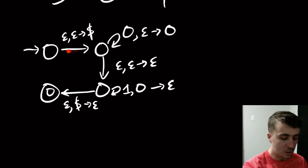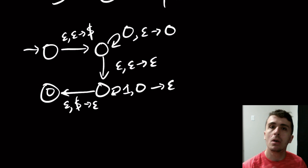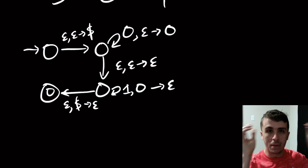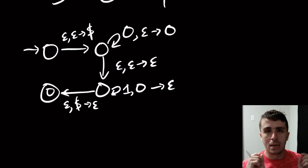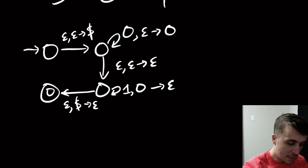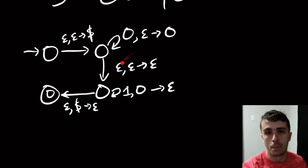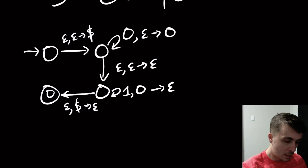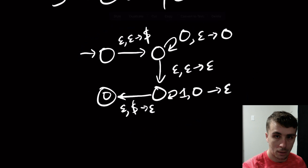We can easily see that the dollar sign pushed on here will be popped off here, ensuring the stack ends empty — which is one of the steps we need. But rather than thinking carefully, I want to apply this algorithmically. The other thing we need to ensure is that no transition does neither push nor pop, or both. We certainly have one like that, so let's make the modifications we need.